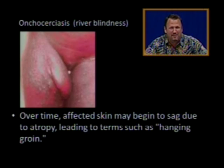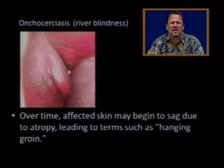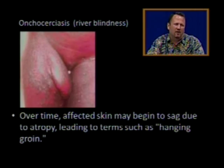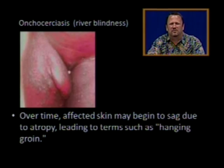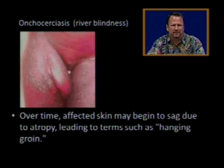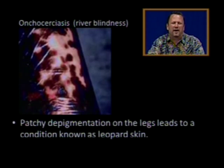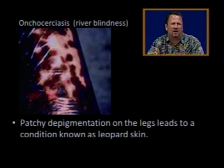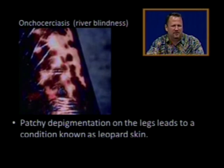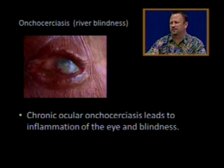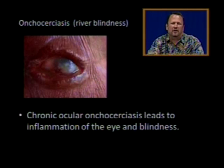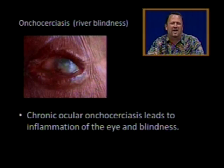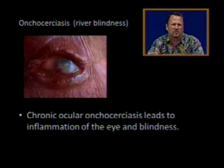Over time, the affected skin may begin to sag and atrophy — thin — leading to terms such as hanging groin. Patchy depigmentation, meaning loss of color on the legs, leads to a condition known as leopard skin. Chronic ocular onchocerciasis leads to inflammation of the eye and blindness, hence the term river blindness.